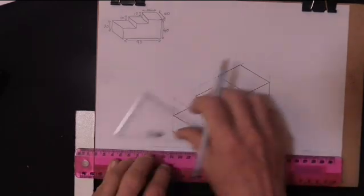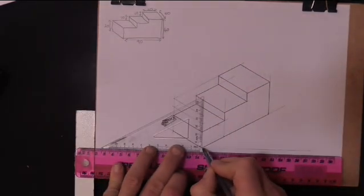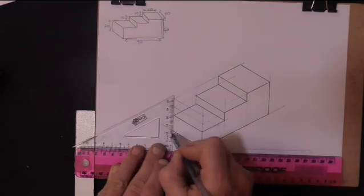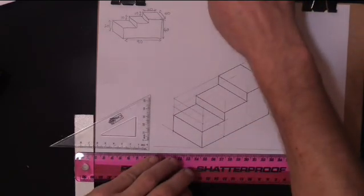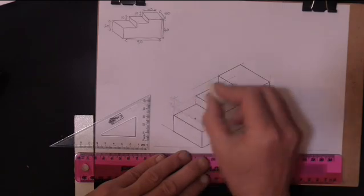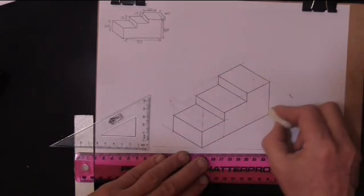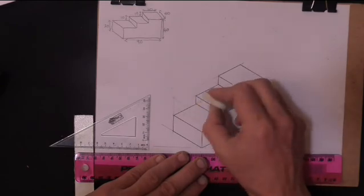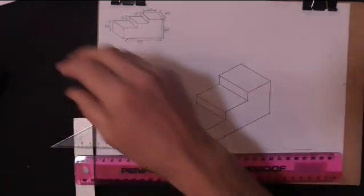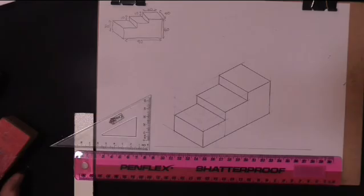And the last two vertical lines of the front step, and they are finished. I'm just going to lightly erase the construction lines that may confuse the drawing, and I'm hoping you can now see the three steps. Isometric view.